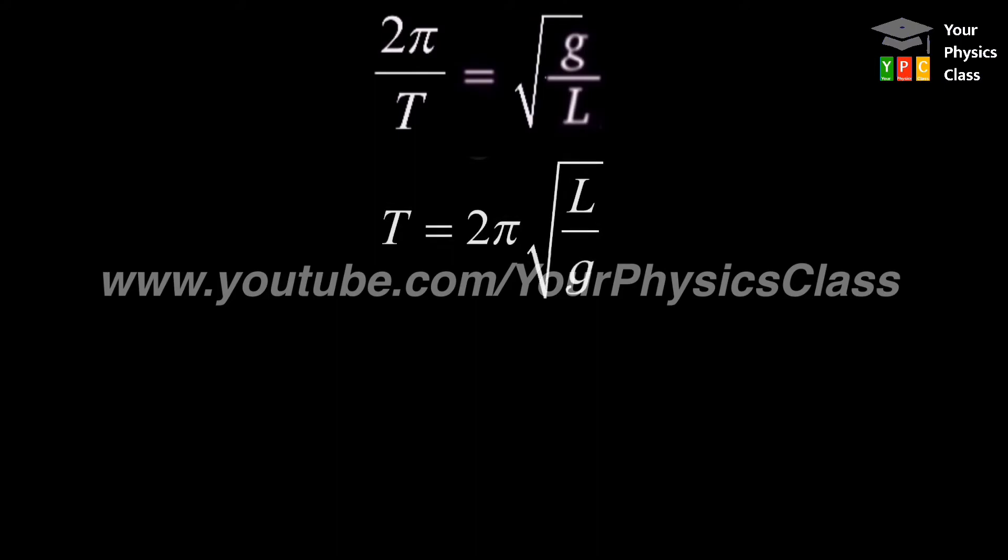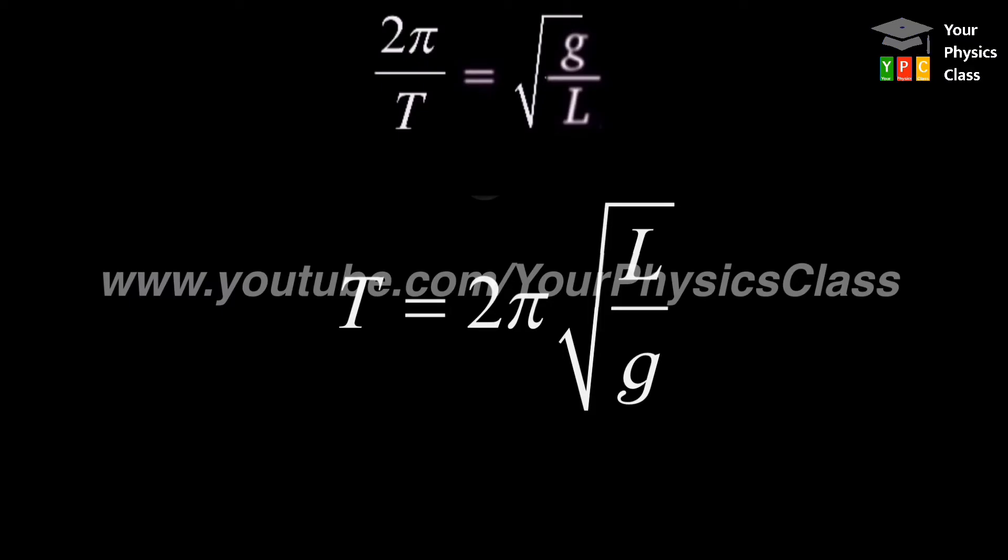We know that the value of omega is nothing but 2π by T. On simplifying, we get equation for time period of simple pendulum, which is T equals 2π under root of L by g.